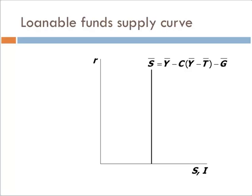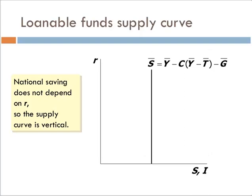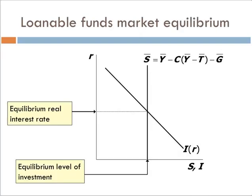So here's our supply of loanable funds. We can superimpose over that the demand for loanable funds — the investment function — and the intersection of these two gives us the real interest rate. At the equilibrium level, the actual equilibrium level of investment is determined by the amount of savings, which is fixed in our model. Therefore, we have a real interest rate r* and an equilibrium investment level of S̄.